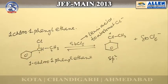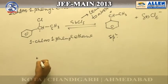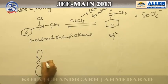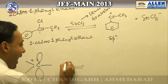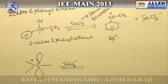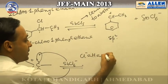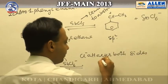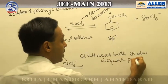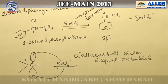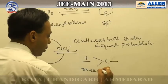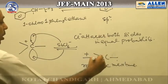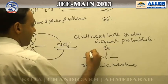That carbocation is SP2 hybridized, and SP2 hybridized carbon has vacant PZ orbitals. Those PZ orbitals will be attacked by SbCl6 minus, and Cl minus attacks both sides with equal probability.